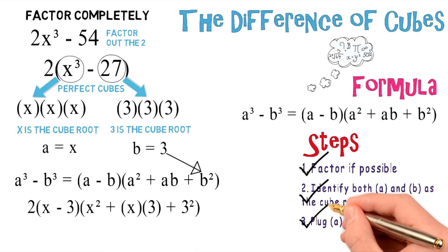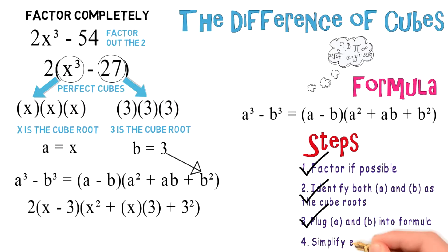And now we can check off step number 3 and move on to the last step, which is to simplify the expression. So here we are, and it's ultimately simplified into 2 times x minus 3 times x squared plus 3x plus 9. And take a look, it's been completely factored, so let's check off the last step and let's celebrate because we finished this problem.